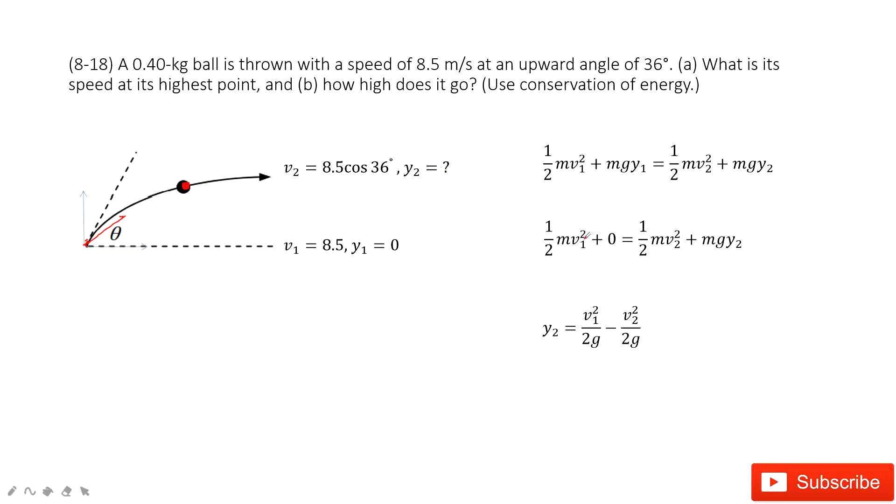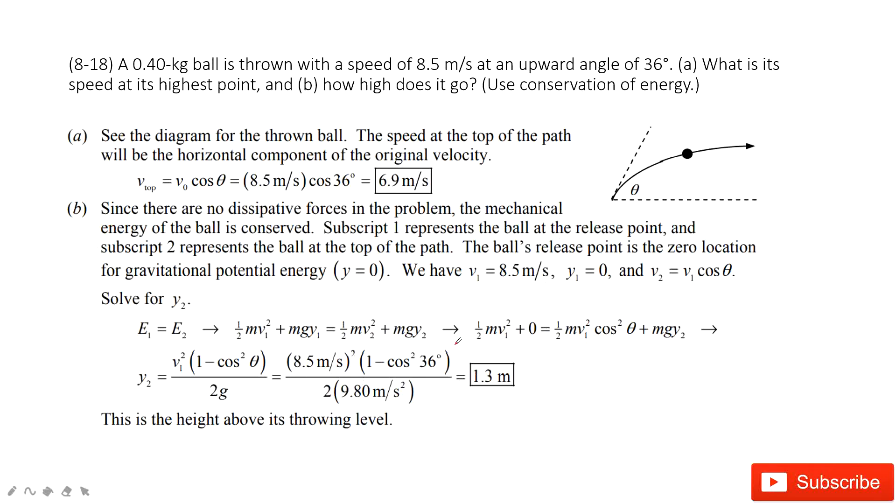Now we input the known quantities. The Y1 is 0. And then we can solve the equation. It looks like the Y2 equals this equation. As you can see, V1 is given, V2 is given, G is a constant. When we input the known quantities, we can get the final answer. Thank you.